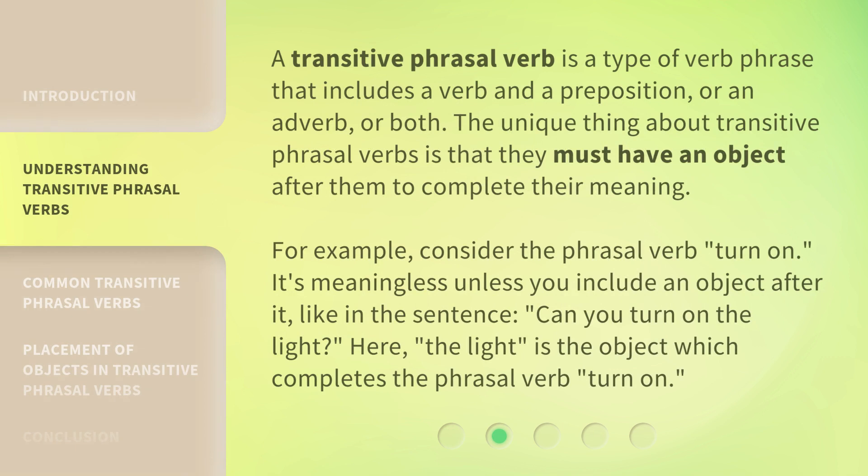A transitive phrasal verb is a type of verb phrase that includes a verb and a preposition, or an adverb, or both. The unique thing about transitive phrasal verbs is that they must have an object after them to complete their meaning. For example, consider the phrasal verb 'turn on' — it's meaningless unless you include an object, like in the sentence: 'Can you turn on the light?' Here, 'the light' is the object which completes the phrasal verb 'turn on'.